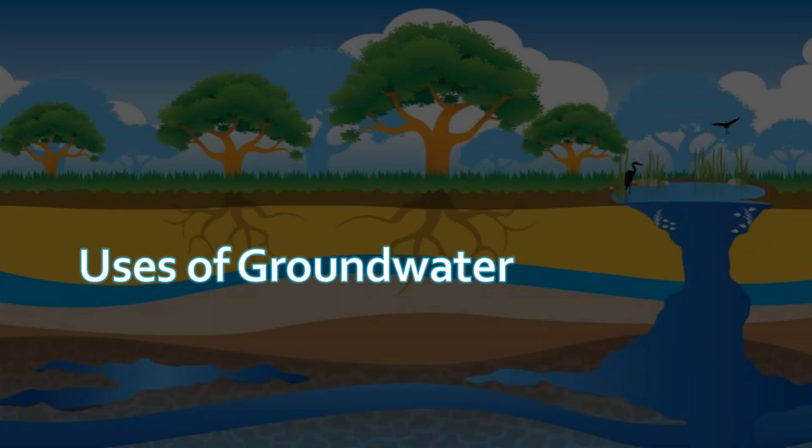Uses of groundwater: groundwater is a safe source of water and considered the cleanest water because it contains plenty of dissolved minerals which the human body needs. It is also used for irrigation to grow crops for our food. Likewise, it is an important component in many industrial processes. It is a source of recharge for lakes, rivers, and wetlands.